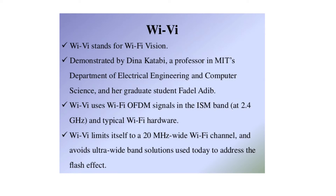Wi-Vi uses Wi-Fi OFDM signals in the ISM band at 2.4 GHz, using typical Wi-Fi hardware. It limits itself to a 20 MHz wide Wi-Fi channel and avoids ultra-wideband solutions.